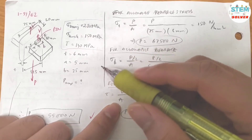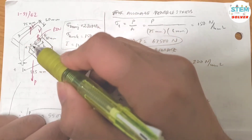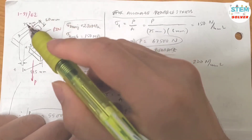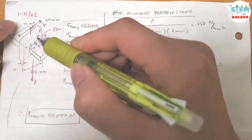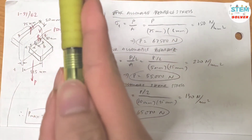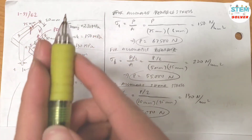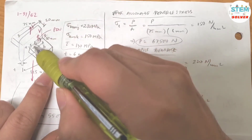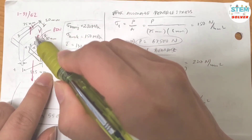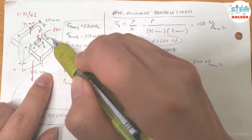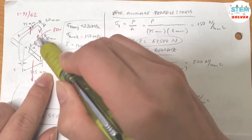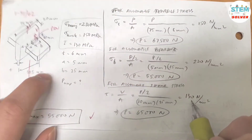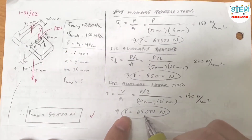What is the shear area? The area is the surface along which the object slips. Along this surface you have 10 mm, and the length is B, which is 25 mm. So the area is 10 times 25 equals 250 mm². Using the allowable shear stress of 130 MPa, P equals 65,000 N.